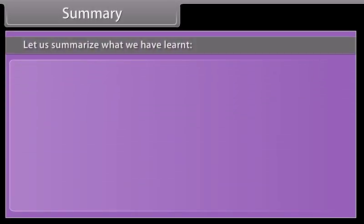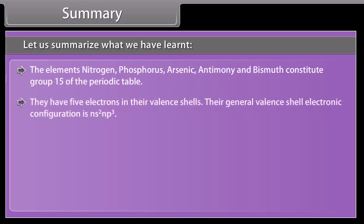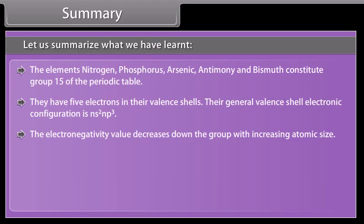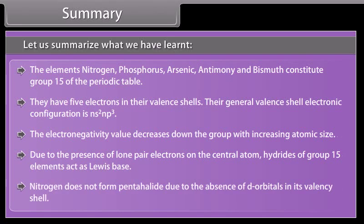To summarize: the elements nitrogen, phosphorus, arsenic, antimony and bismuth constitute group 15 of the periodic table. They have five electrons in their valence shell with general configuration NS2NP3. The electronegativity value decreases down the group with increasing atomic size. Hydrides of group 15 elements act as Lewis bases due to lone pair electrons on the central atom. Nitrogen does not form pentahalide due to the absence of d-orbitals in its valence shell.